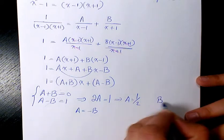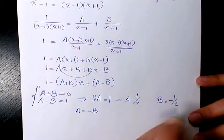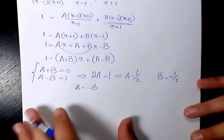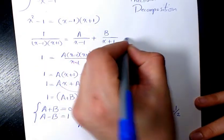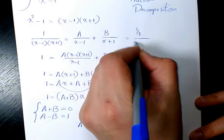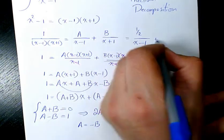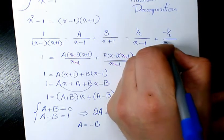So let's go and substitute it in here. It's going to be 1 half over x minus 1 plus negative 1 half over x plus 1.